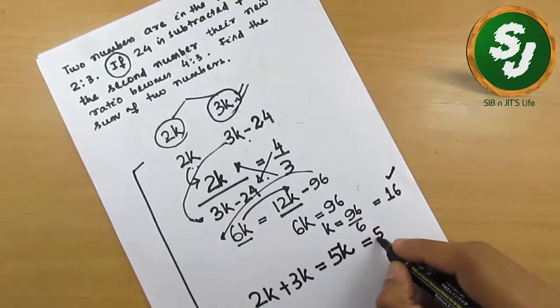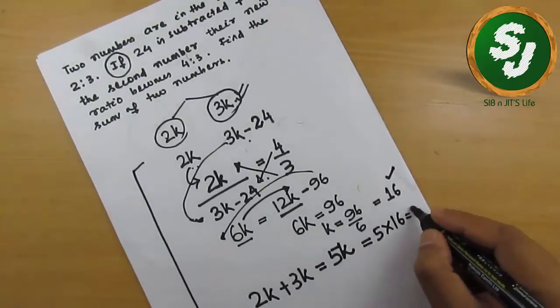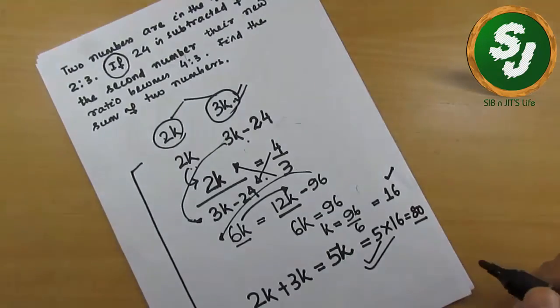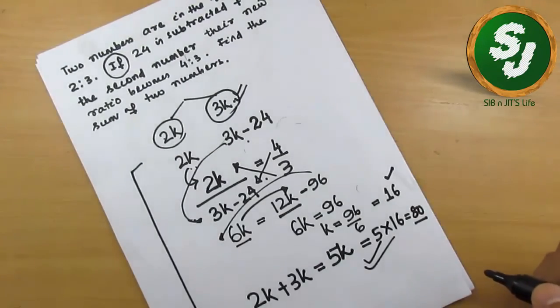This means the sum of two numbers is 5k. And we have found the value of k, so 5 into 16 is equal to 80. So the sum of two numbers is 80. This is how we solve the question. Once you practice this technique, you will be able to solve this question with much more accuracy and you will take even fewer minutes than whatever we took to explain